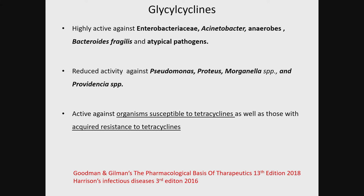Tigecycline has reduced activity against Pseudomonas and members of the Proteeae family — Proteus, Morganella, and Providencia. Its activity extends to organisms that are susceptible to tetracyclines, and also to those which are resistant to tetracyclines.